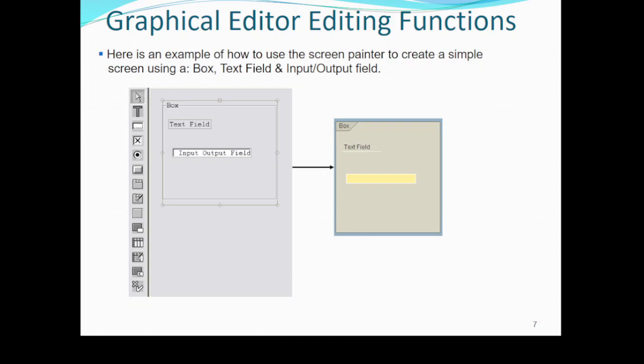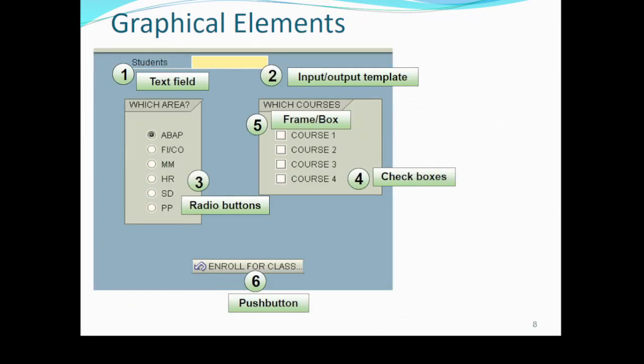Here is an example of how to use the Screen Painter to create a simple screen. We are creating a simple example comprising a box, a text field, and an input/output field. You can see we put a text field and an input/output field into a single box with a label — this is the box graphical element.